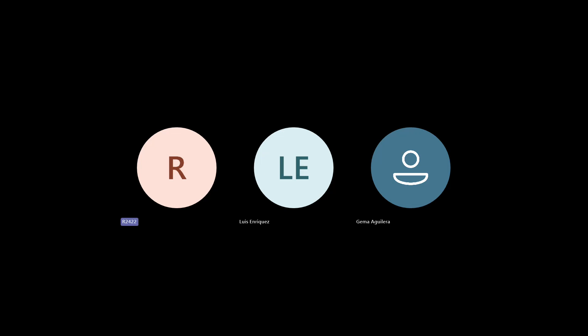Entonces, el día de ayer estuvimos viendo los diferentes tiempos gramaticales que tenemos en el inglés, para formular distintas oraciones, ya sea en presente, pasado y futuro. Y como nos dimos cuenta, tenemos varias categorías, ¿no? En presente, ¿qué tiempos recuerdan o qué tiempos gramaticales podemos hacer en presente? En presente simple y presente continuo. Ok, excelente. Perfecto.